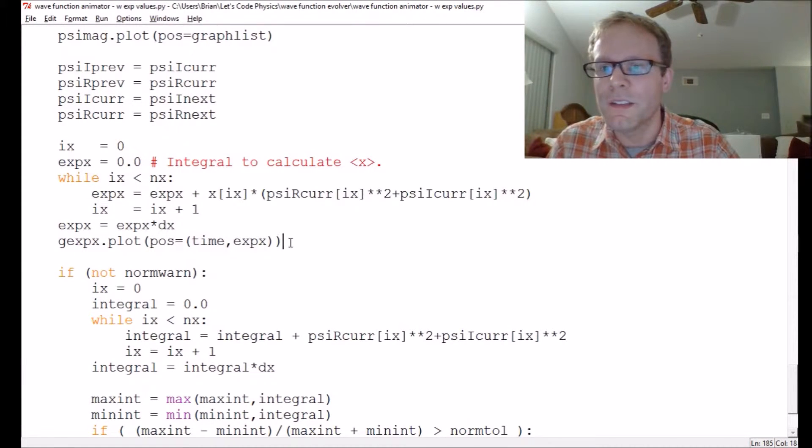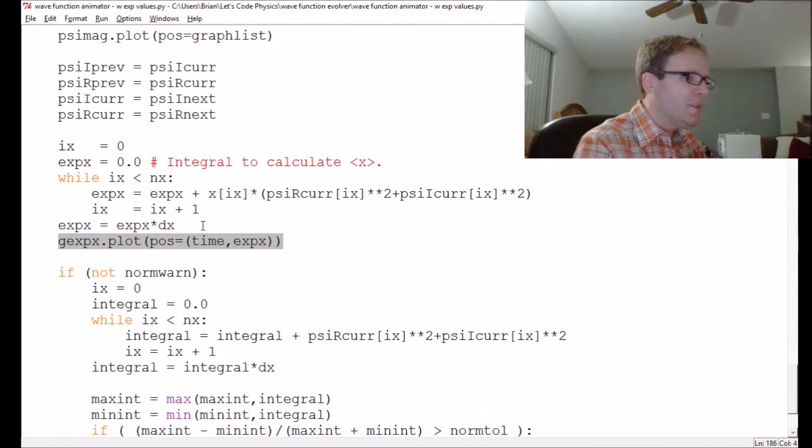We're going to graph the expectation value of position versus time. The reason we're particularly interested in this is a concept called Ehrenfest's theorem. Ehrenfest's theorem is really one of the most important things in quantum mechanics. Unfortunately it doesn't make its way very prominently into the textbooks. Ehrenfest's theorem says that as you take the expectation value of a physical observable in quantum mechanics, that expectation value should behave the same way that the variable does in classical mechanics.